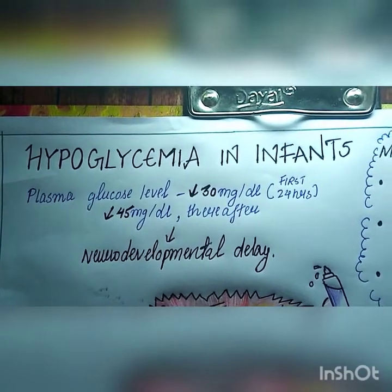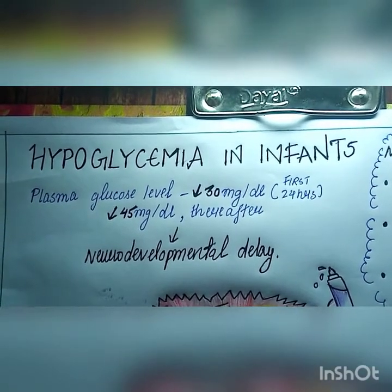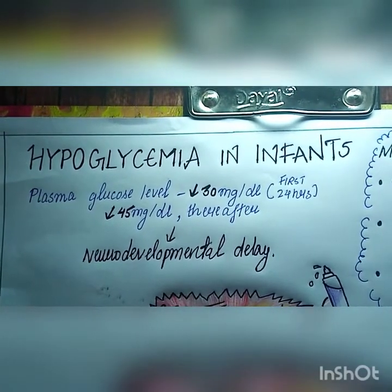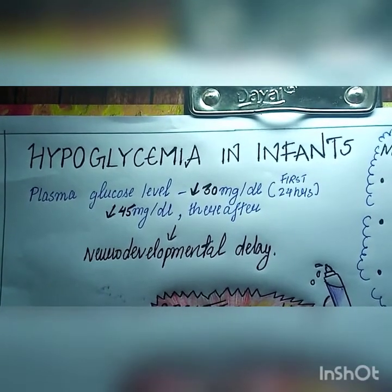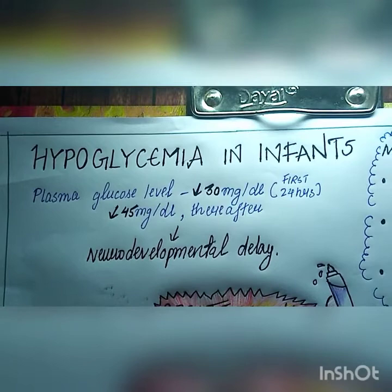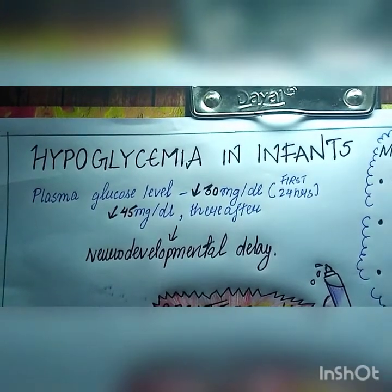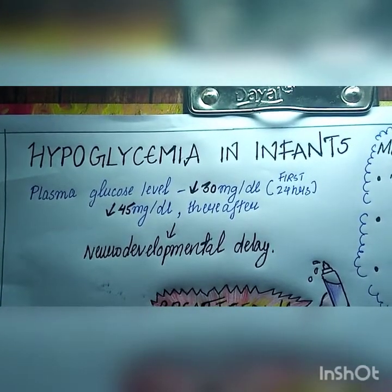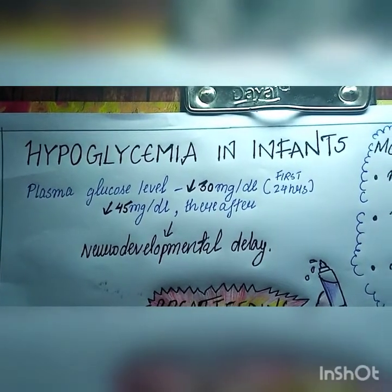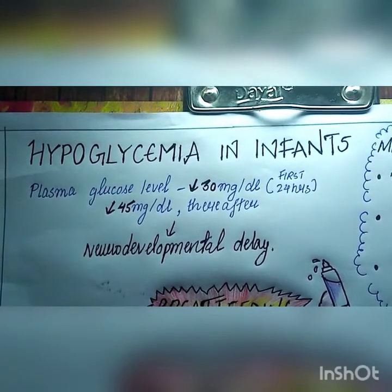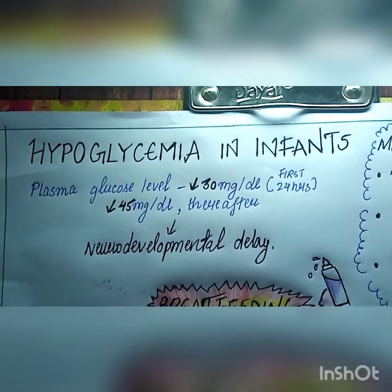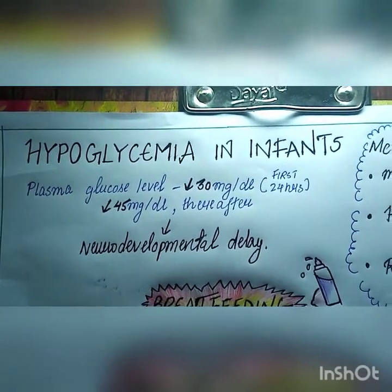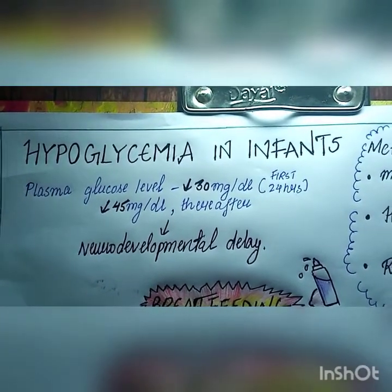Hypoglycemia in infants. Hypoglycemia means a decrease in the glucose amount in the blood. In infants, if the plasma glucose level is less than 30 mg per dl in the first 24 hours and less than 45 mg per dl thereafter, then there may be neurodevelopmental delay. Glucose is the main source of energy in the child.